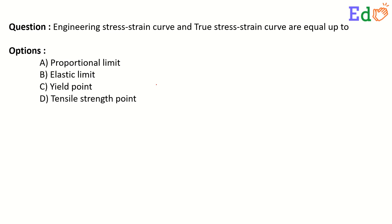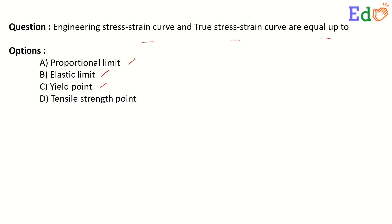The question: engineering stress-strain curve and true stress-strain curve are equal up to — options are given: (a) proportional limit, (b) elastic limit, (c) yield point, (d) tensile strength point.